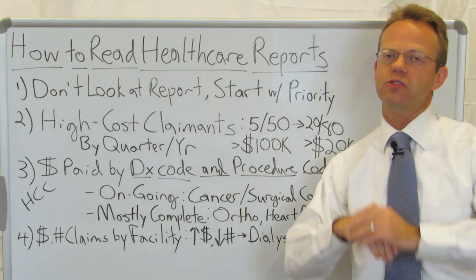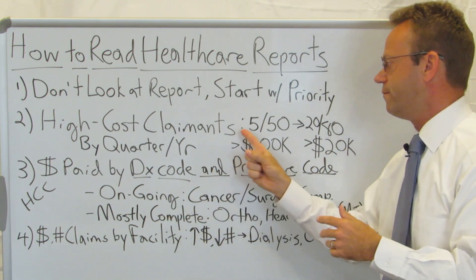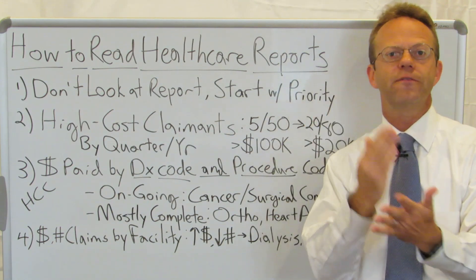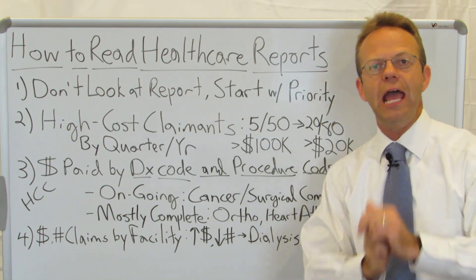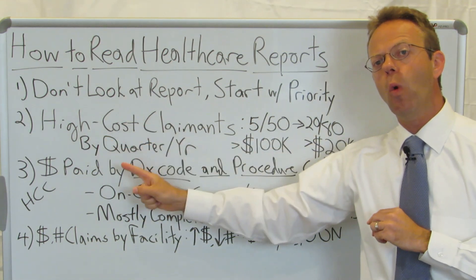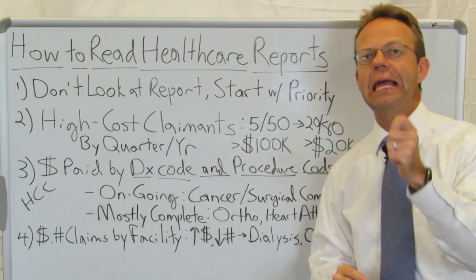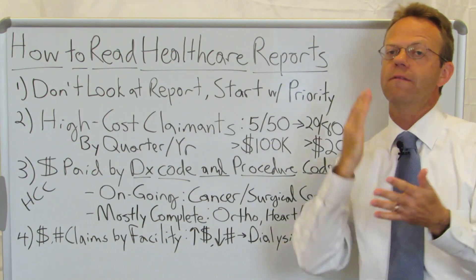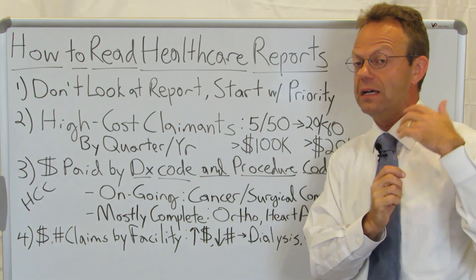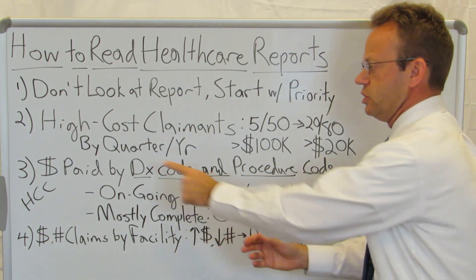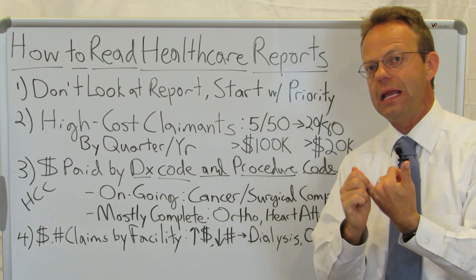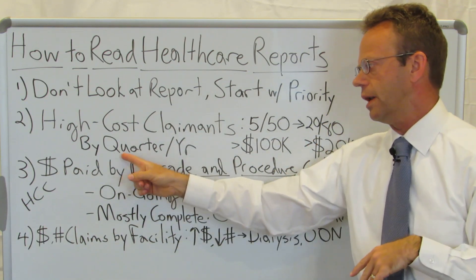The first thing to look at is the high-cost claimants. Five percent of employees drive 50% of healthcare costs, and 20% of employees drive 80% of healthcare costs. Look at it by claimant, not claim. A person might have individual claims of $15,000 a pop — that might not hit your radar as high cost — but they might be getting a specialty pharmacy medication infusion once a month for $15,000. So look at it by quarter or by year, not by month — that's too short.